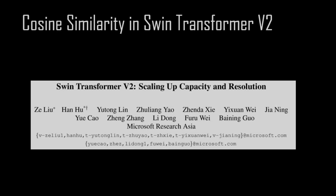In this video we are going to modify our code to have cosine similarity instead of dot product similarity, something that has been introduced in version 2 of the Swin Transformer.